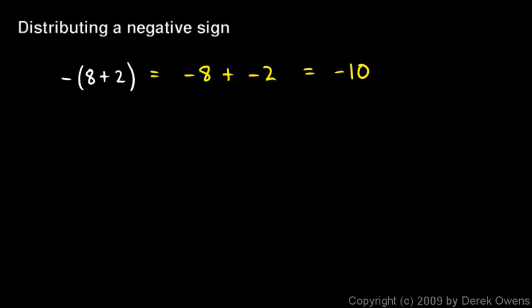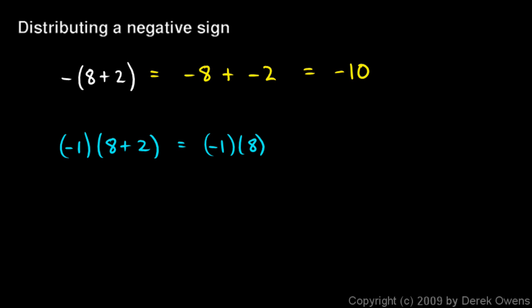Some people think of this as distributing a negative 1. This negative sign can be thought of as a negative 1. In other words, you could think of this as negative 1 times (8 plus 2). So you have this thing multiplied by this group, so the negative 1 gets multiplied by the 8 and by the 2. So this would be negative 1 times 8, and then the plus, and then negative 1 times the 2 — negative 8 plus negative 2 — and we get negative 10. So you can think of it as distributing the negative 1.